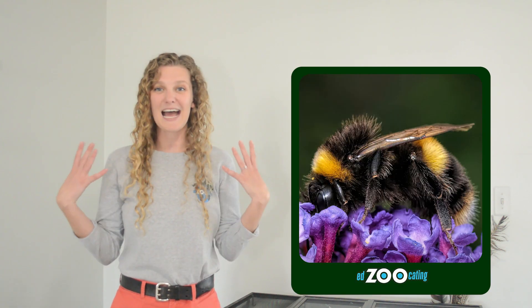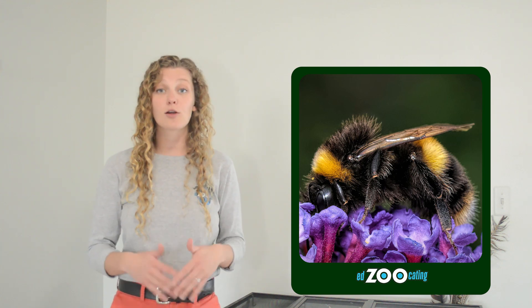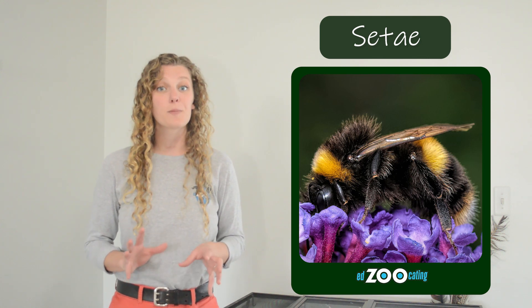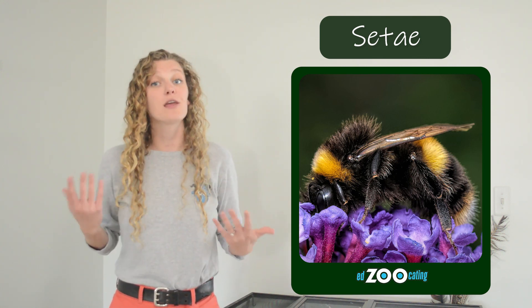Usually when we picture bees, we picture them being fuzzy as well. Their bodies are covered in these structures that look like hairs, but they're called setae, and the setae are really important for bees to sense vibrations around them, to feel movement.